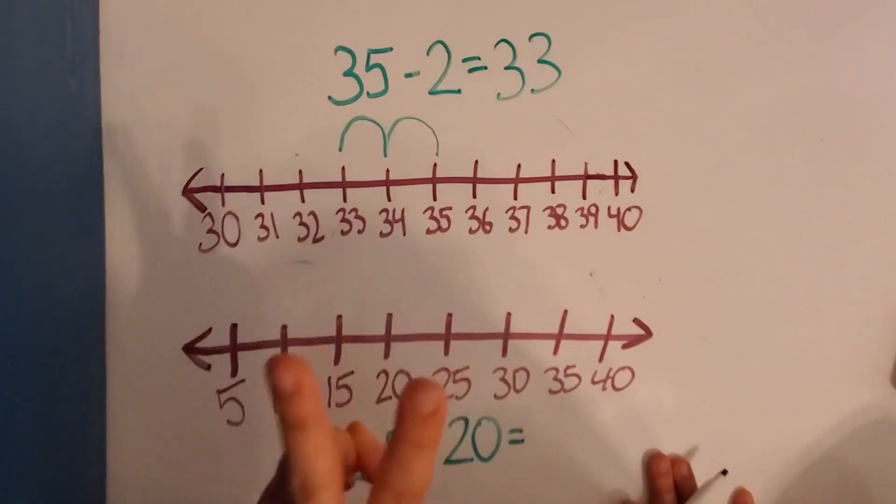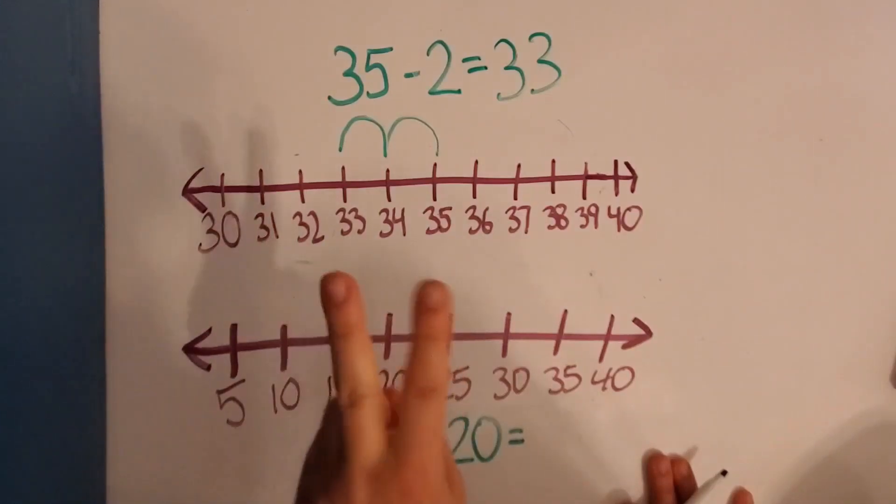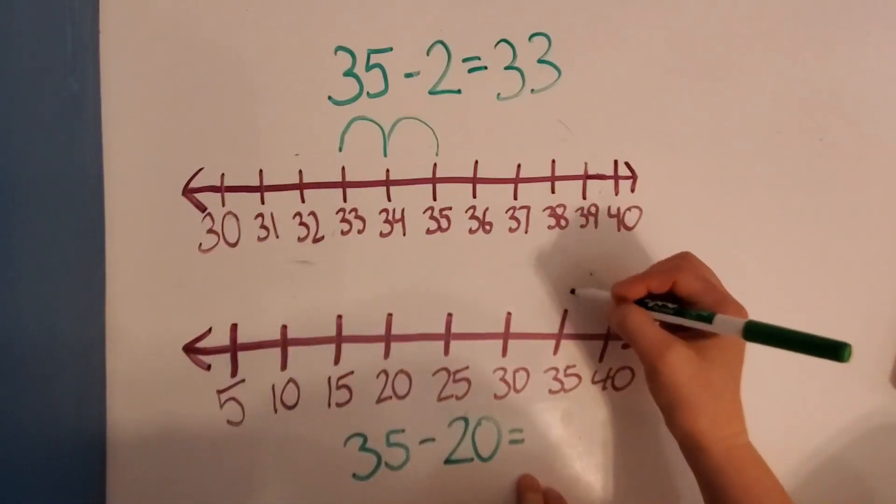2 tens are in 20. So we're going to go back by 10s two times. So let's start at 35. And we're going to go back by 10. So 35 to 30, that's 5. So we need to go another 5, right? To 25.